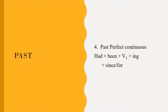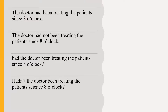Fourth, past perfect continuous. Formation: 'had' plus 'been' plus first form of verb plus '-ing'. Example: 'The doctor had been treating the patients since 8 o'clock.' This is an affirmative sentence. 'The doctor had not been treating the patients since 8 o'clock' is a negative sentence. 'Had the doctor been treating the patients since 8 o'clock?' is an interrogative sentence.